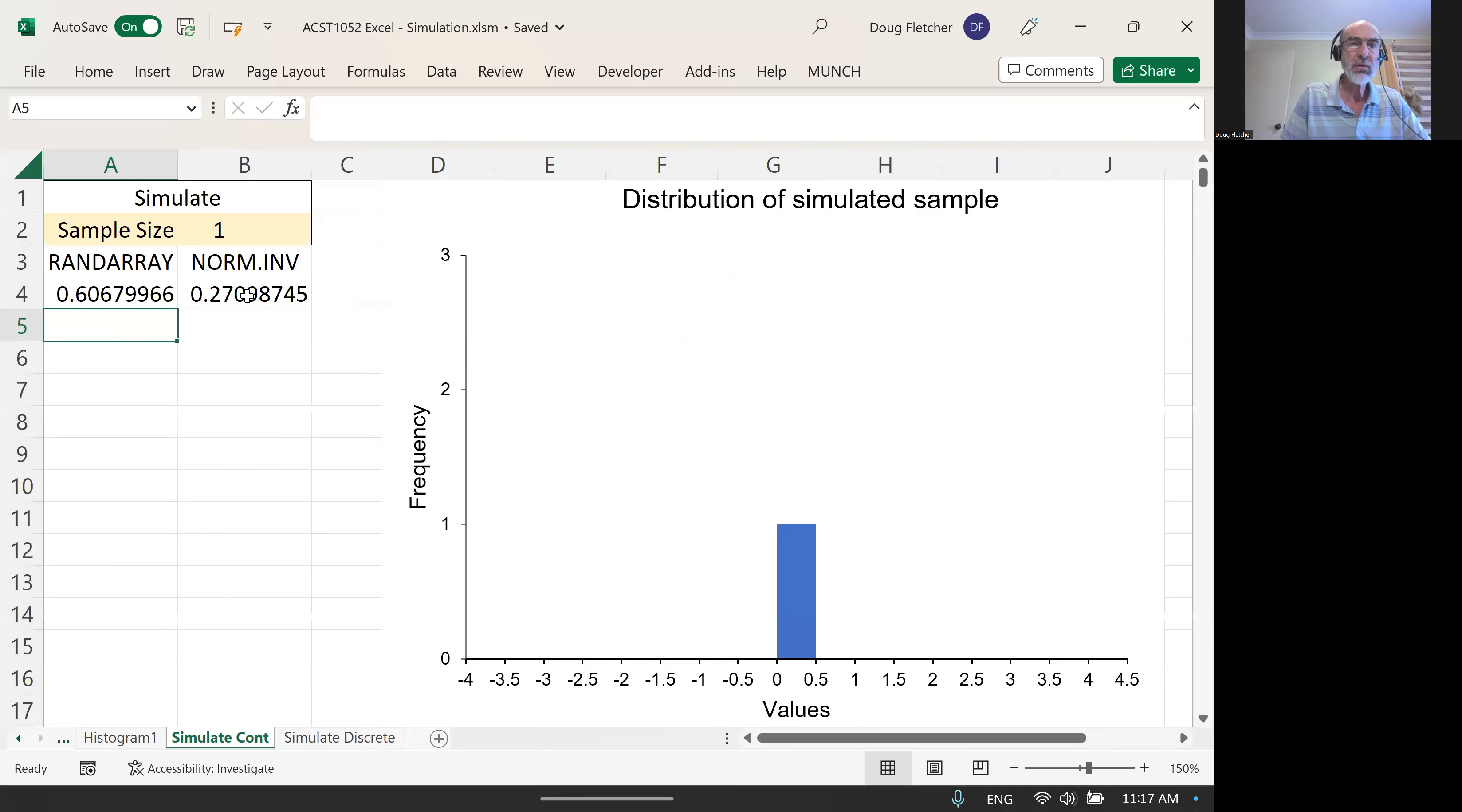Excel provides inverse functions for most of the probability distributions. Here what I have is NORM.INV. The first parameter is the probability, so this is where we put in our value from RAND.ARRAY. I'm referring to cell A4, and I've got this hash at the end of that reference which says when we generate more values, take all the rest of the values as well. Then I'm providing here the mean and standard deviation of the normal distribution from which we are generating these random values. Here I'm using a standard normal distribution with mean of zero and standard deviation of one.